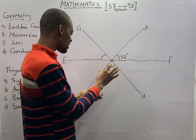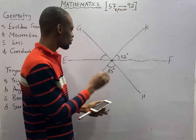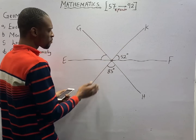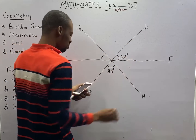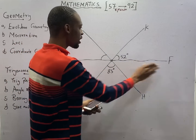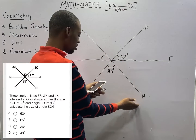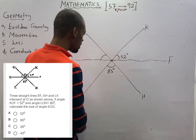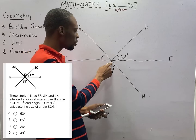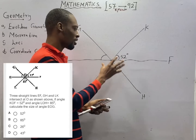You are given something like this. They say that three straight lines — EF is one straight line, GH is another straight line, and LK is another straight line. The three lines intersect at point O, the origin, as shown.